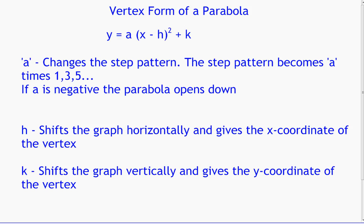We've just looked at what we call vertex form of a parabola. Let's put it all together. Here's the equation: y equals a bracket x minus h close bracket squared plus k. The a changes the step pattern — the step pattern becomes the a value multiplied by 1, 3, 5, and so on. When a is negative, the parabola opens down. h shifts the graph horizontally, giving the x-coordinate of the vertex. k shifts the graph vertically, giving the y-coordinate of the vertex.